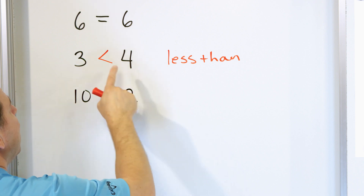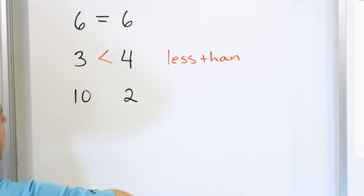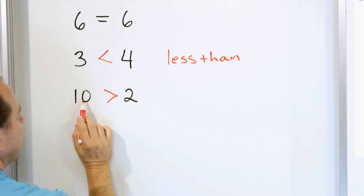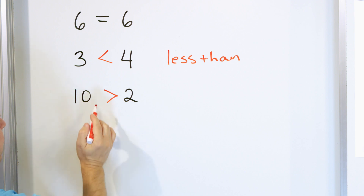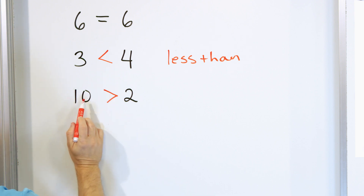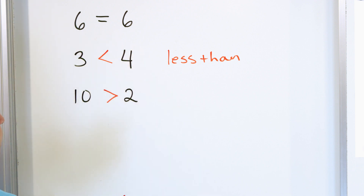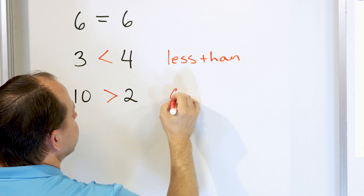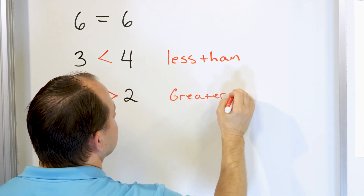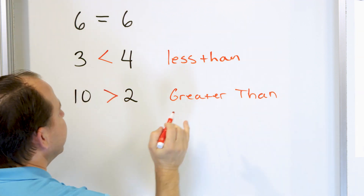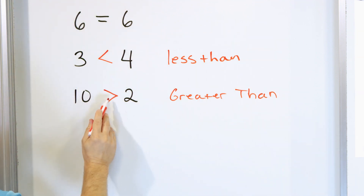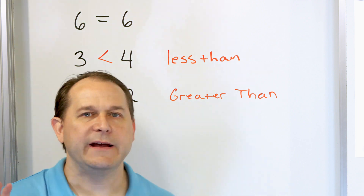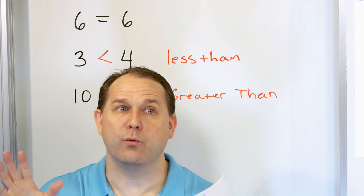Which way would the arrow point? The arrow always points to the smaller number. So here the arrow points to the two because that's obviously smaller than 10. The big side is opened up next to the bigger number. When the arrow goes to the right like this, we call it greater than. So the way we read this is: 10 is greater than two. Three is less than four.